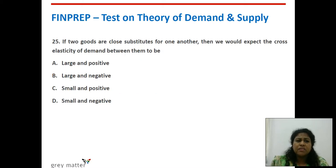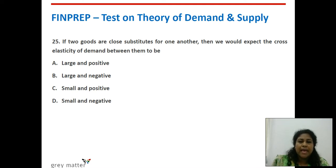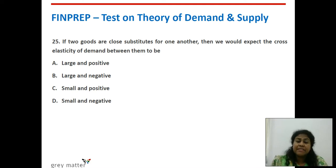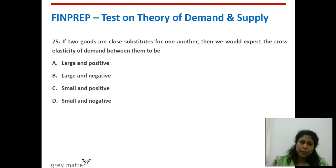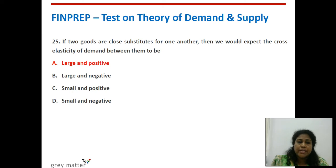Twenty-fifth question: if two goods are close substitutes for one another, then we would expect the cross elasticity of demand between them to be what? Substitutes are like enemies that compete with each other, but cross elasticity behaves in a friendly manner — they move in the same direction, so it is positive. Because they are close substitutes, the cross elasticity is large and positive.